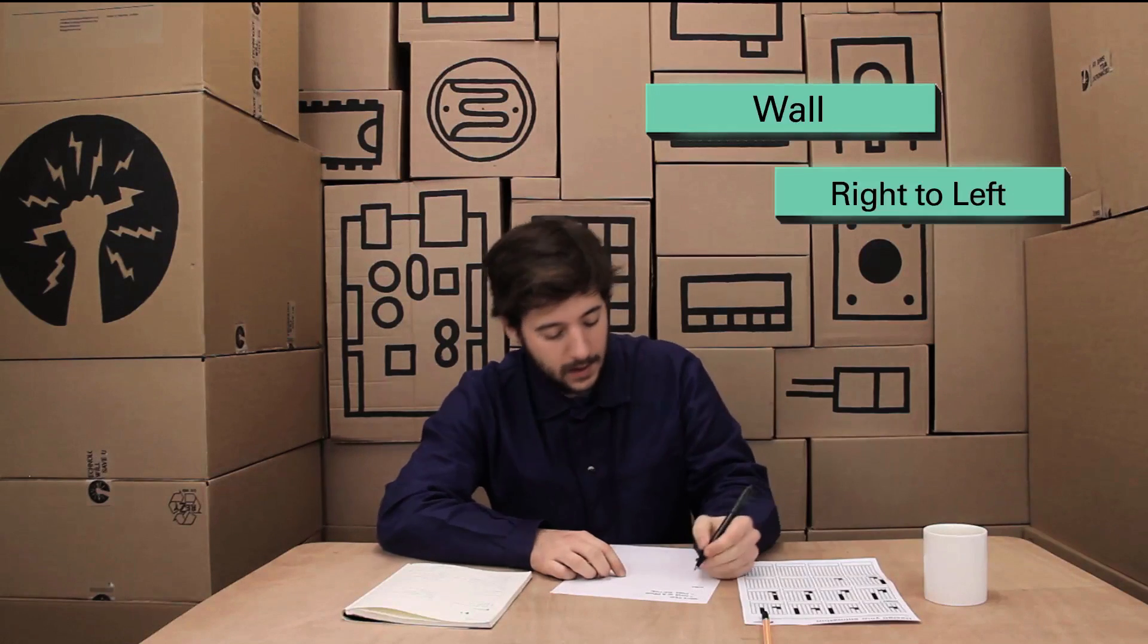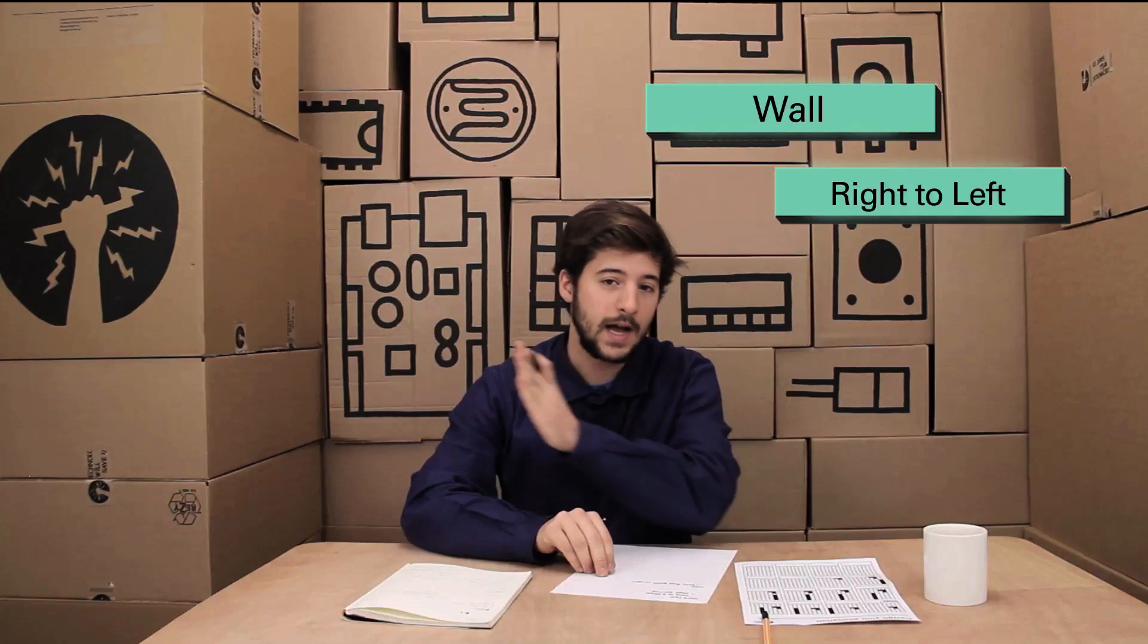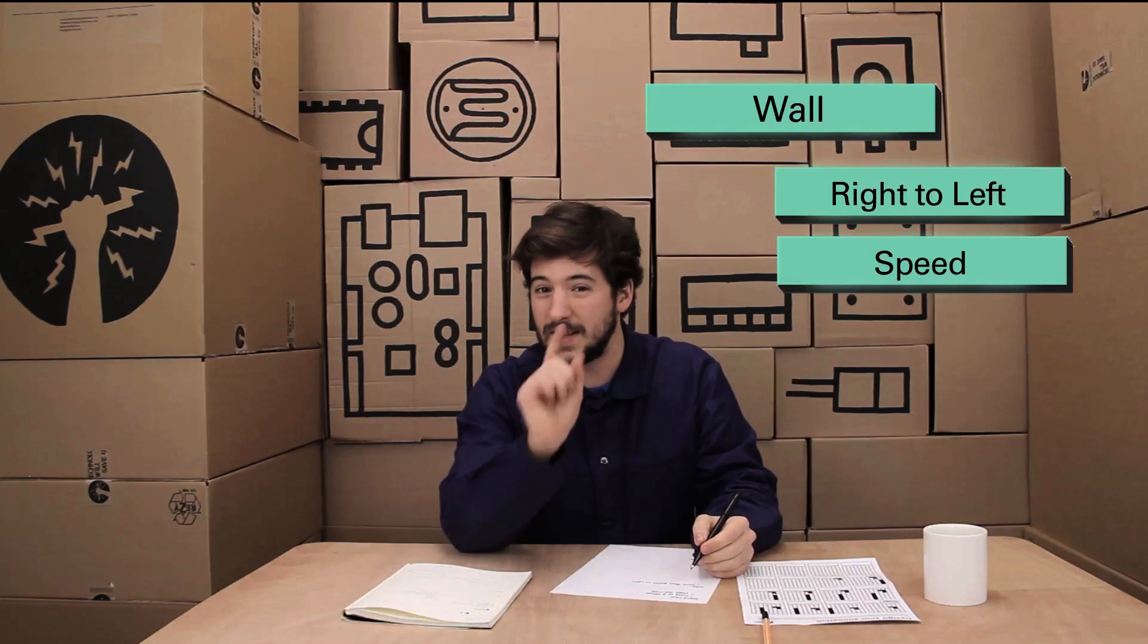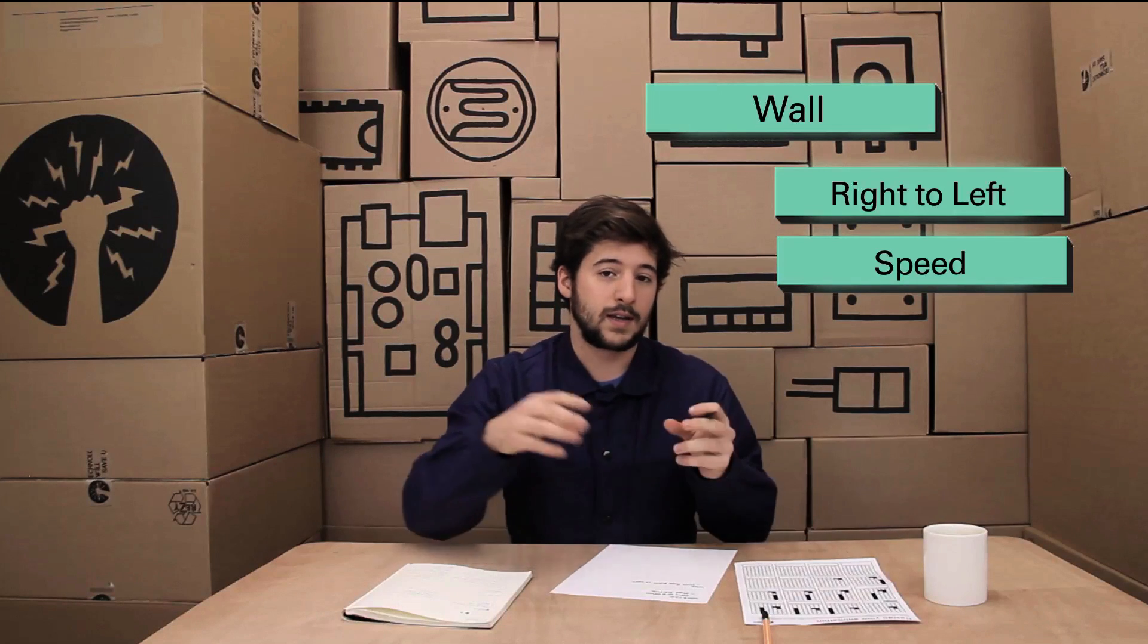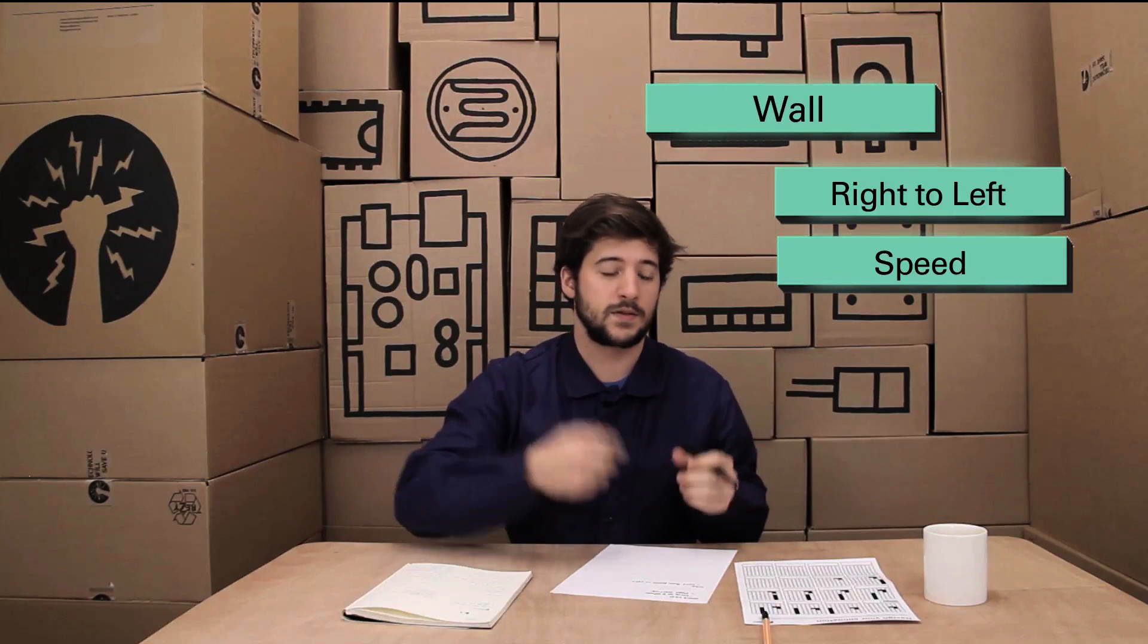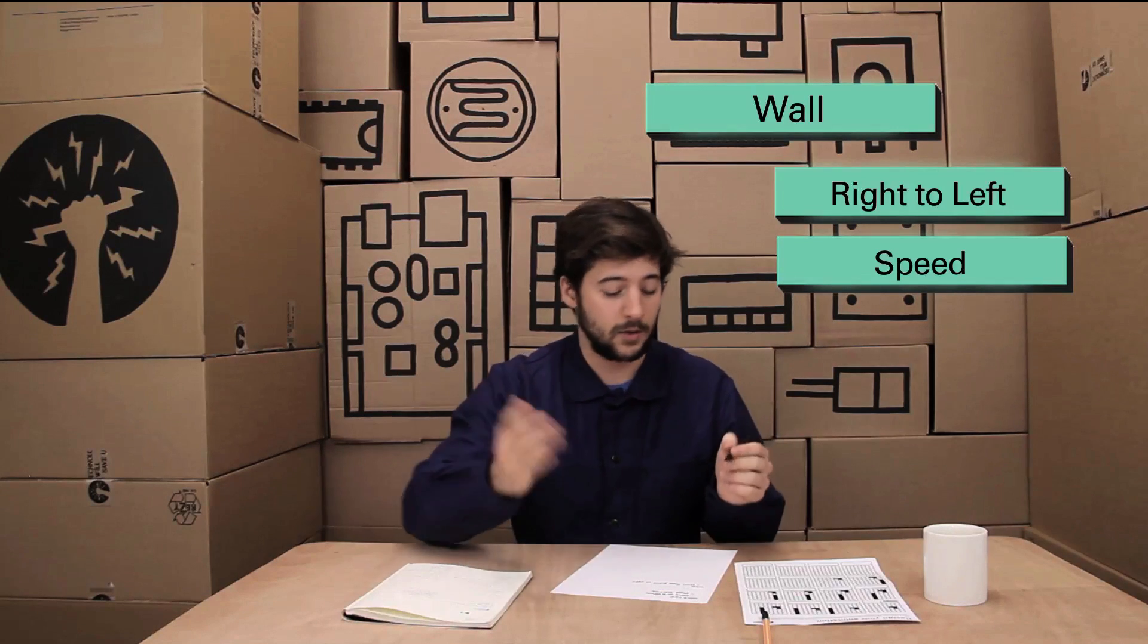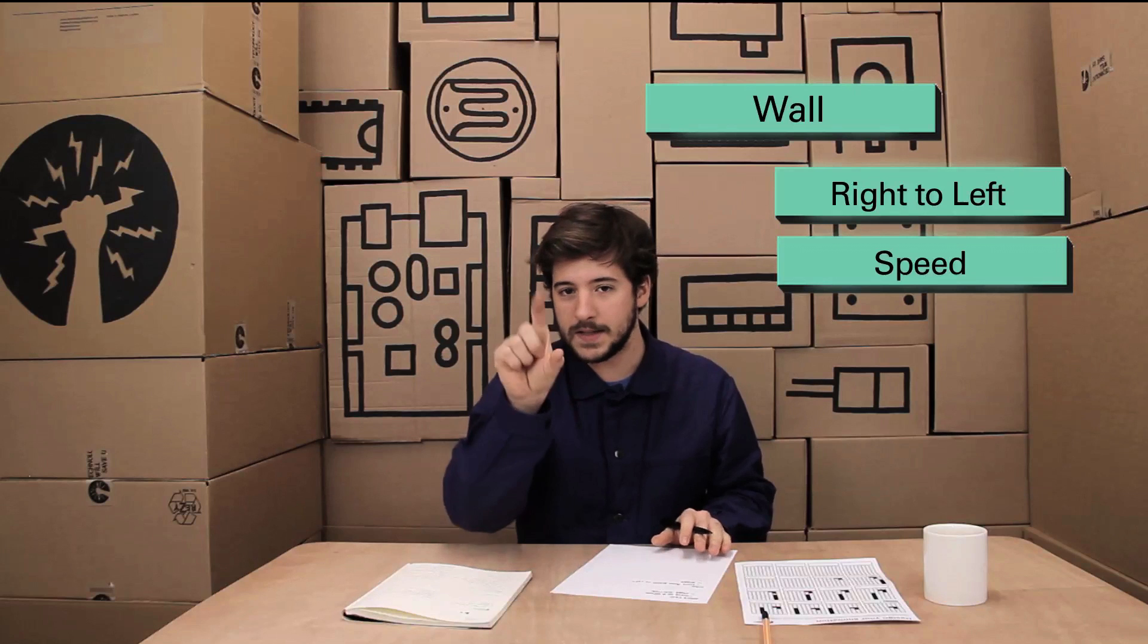We need to be able to move the wall from right to left. We also need to be able to control how quickly it moves from one side to the other, because that's kind of the difficulty. Maybe for example we will want to get it to go faster and faster, so the better you get at dodging walls, the faster they will come at you.